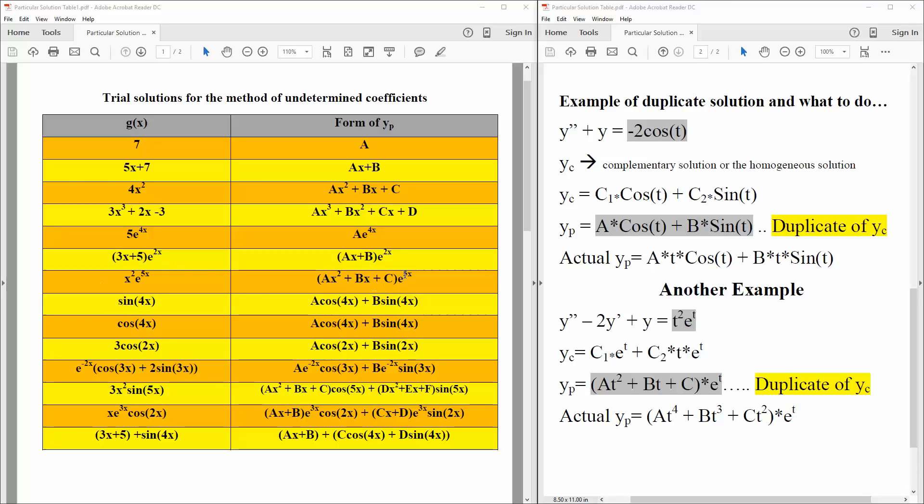sine 4x, we say a cosine 4x plus b sine 4x. cosine 4x, we say a cosine 4x, b sine 4x, they're pretty much the same. 3 cosine 2x, we go a cosine 2x plus b sine 2x.